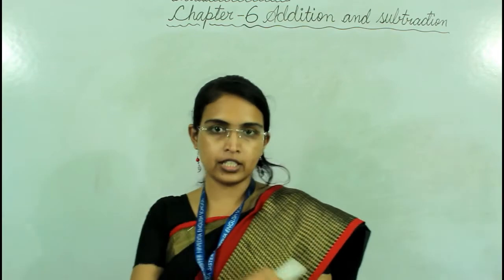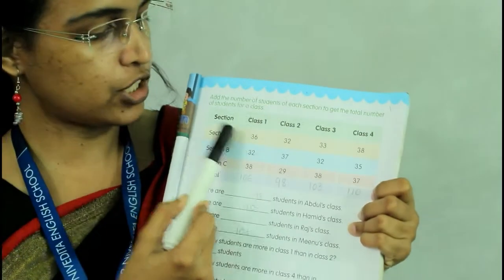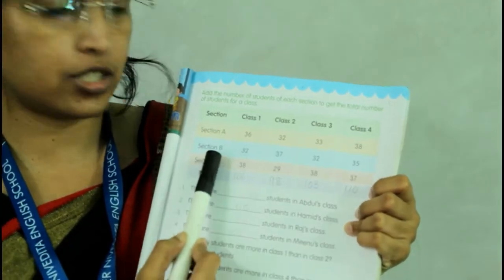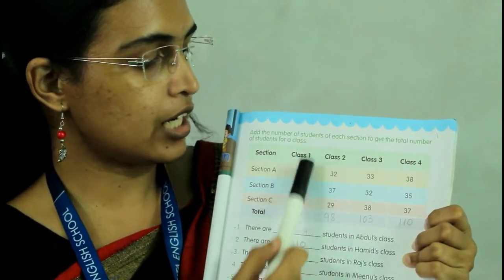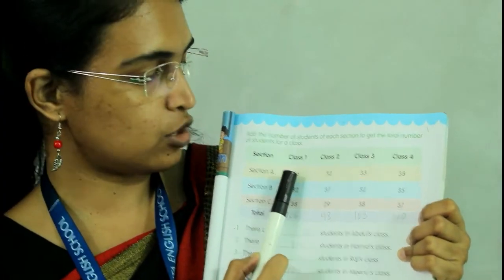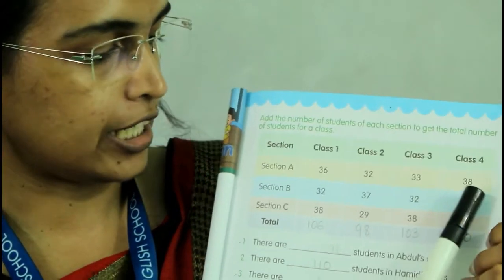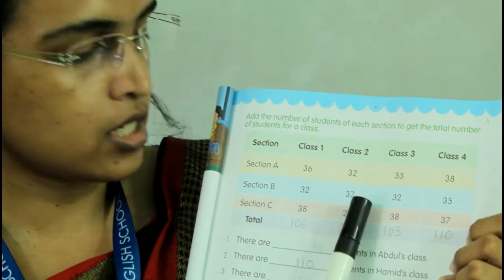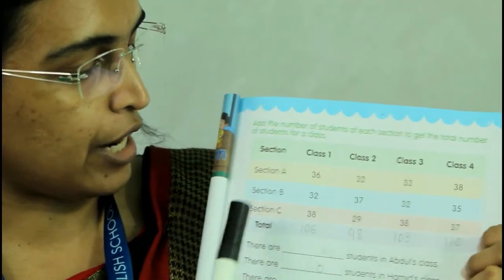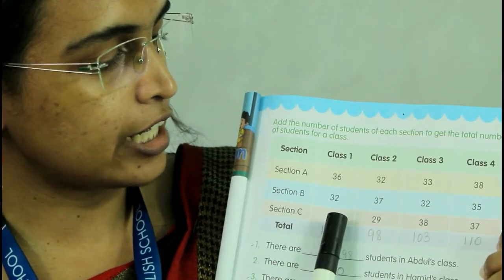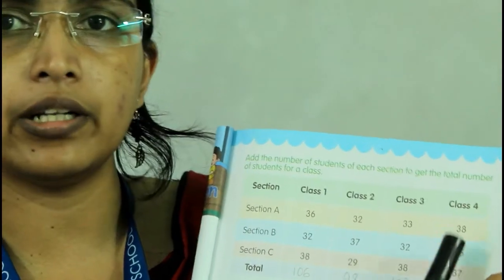The chart shows class 1, class 2, class 3, and class 4. Sections are A, B, and C. In section A, class 1 there are 36 students. In section C there are 38 students in class 1, 39 in class 2, 38 in class 3, and 37 in class 4.